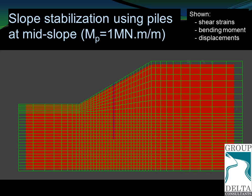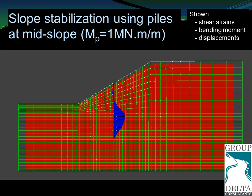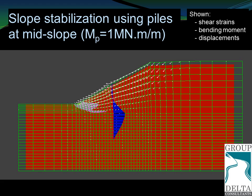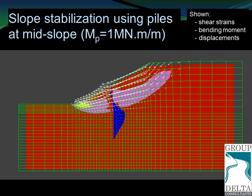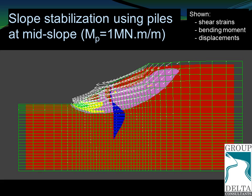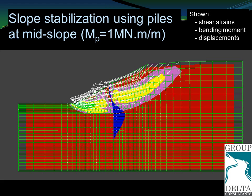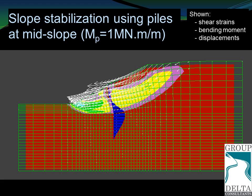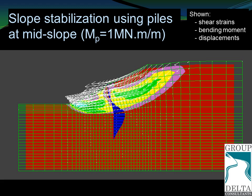This video shows the implementation of the strength reduction method, and it involves a pile with a plastic moment of one mega newton meter per meter. As the strength of the soil is reduced, the maximum bending moment is reached, a plastic hinge develops in the pile, and the contours showing the shear strains in the soil indicate that failure starts to occur through the stabilizing pile.